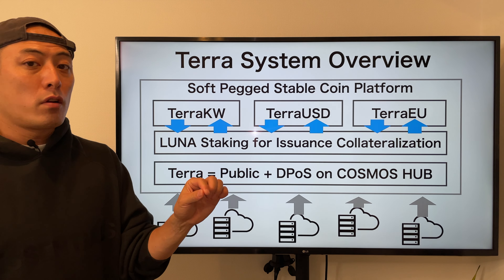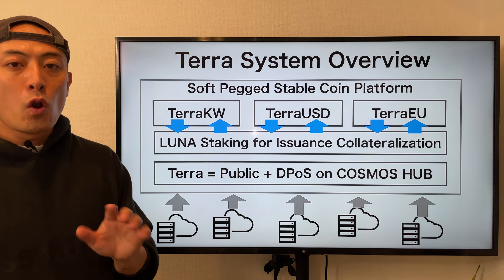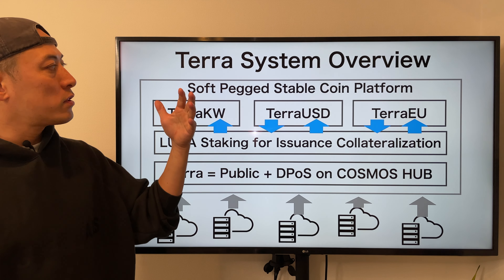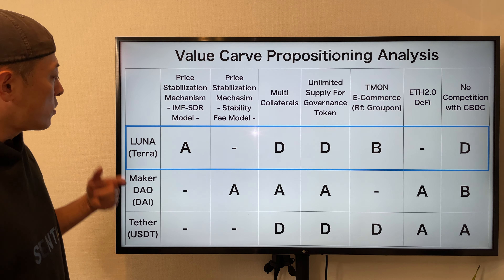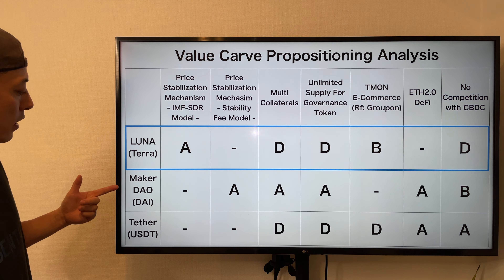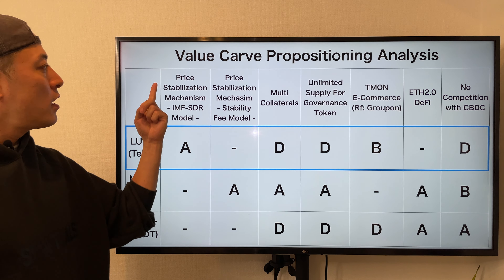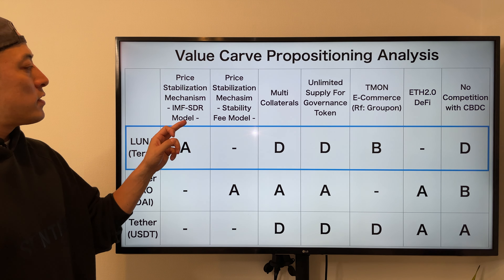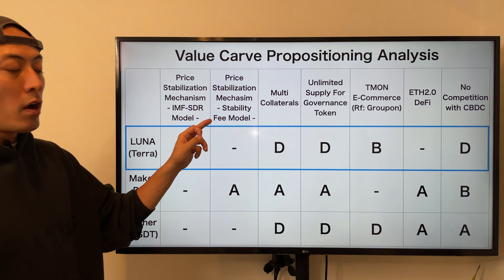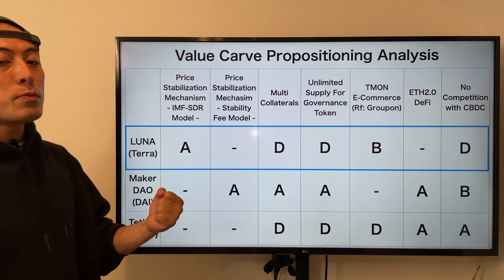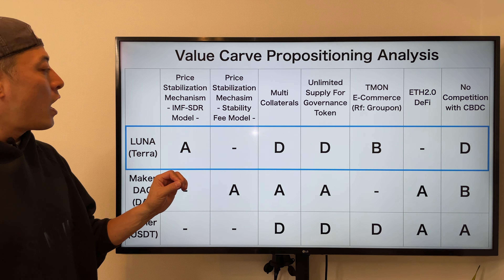Terra issues stable coins not only for USD but also for euro, Korean won, and JPY — this is a key product strategy difference. MakerDAO only issues DAI, a soft-peg stable coin for US dollars only. Here is the major value proposition comparison: LUNA versus MakerDAO DAI versus Tether USD. Many retail investors focus on these two items: IMF SDR model versus the stability DAI model. To me, there is no big difference in the stability mechanism at this point.